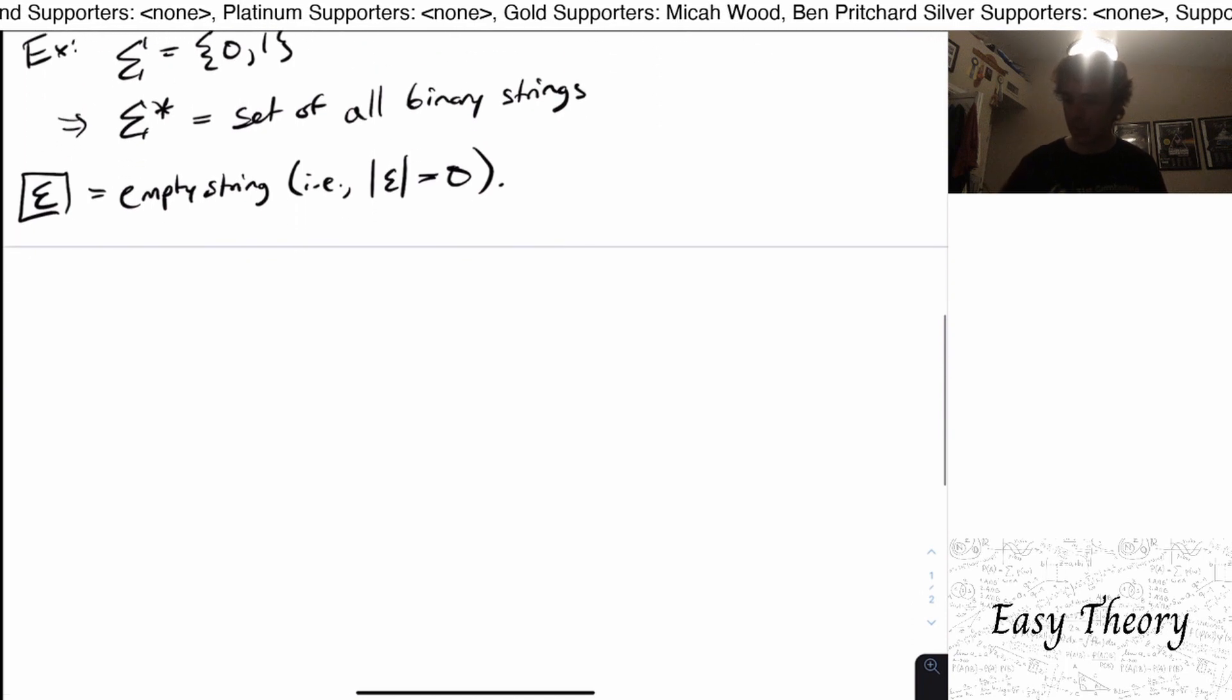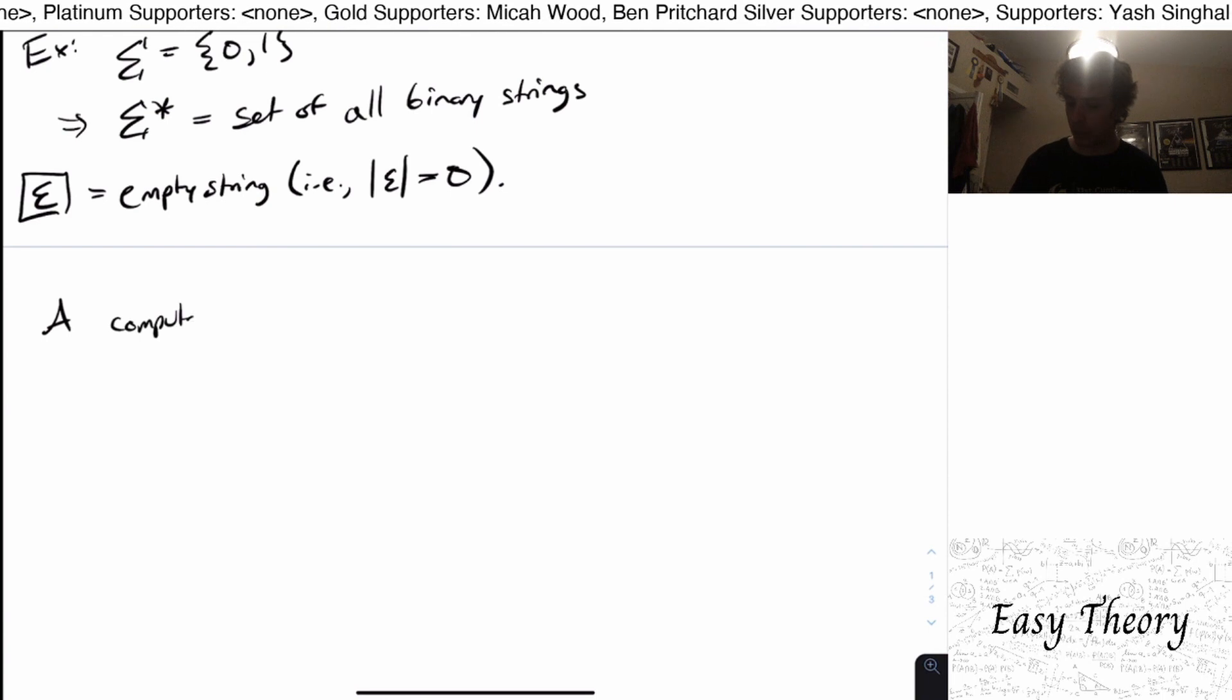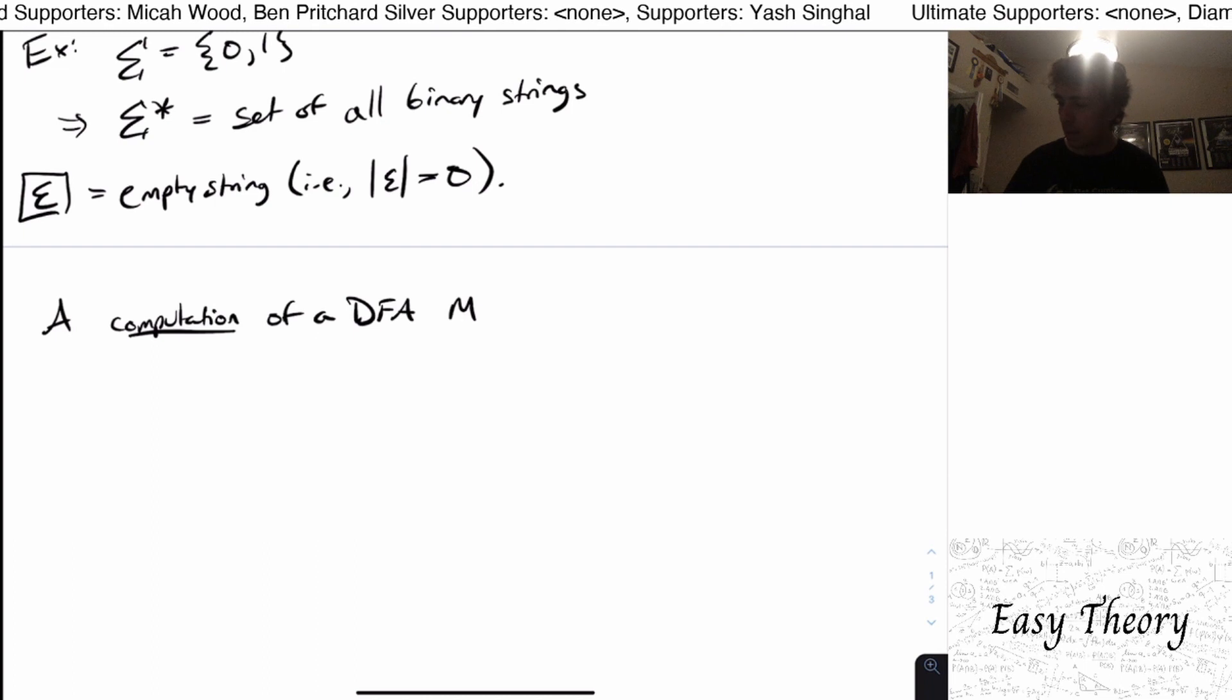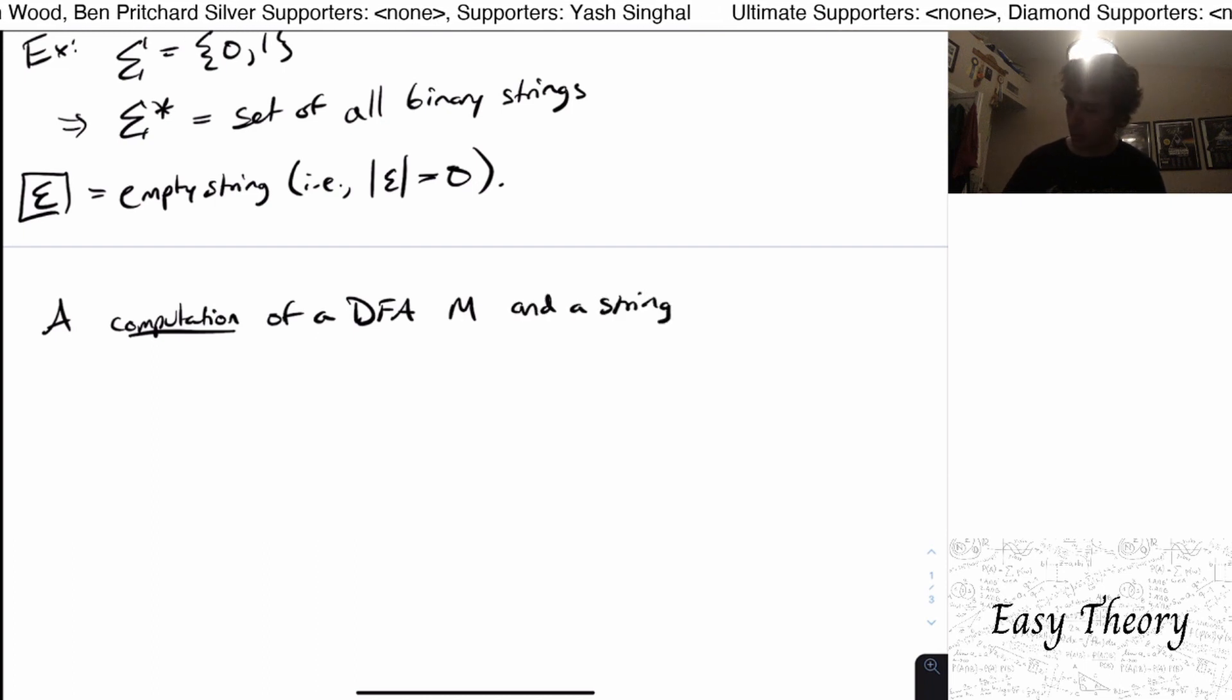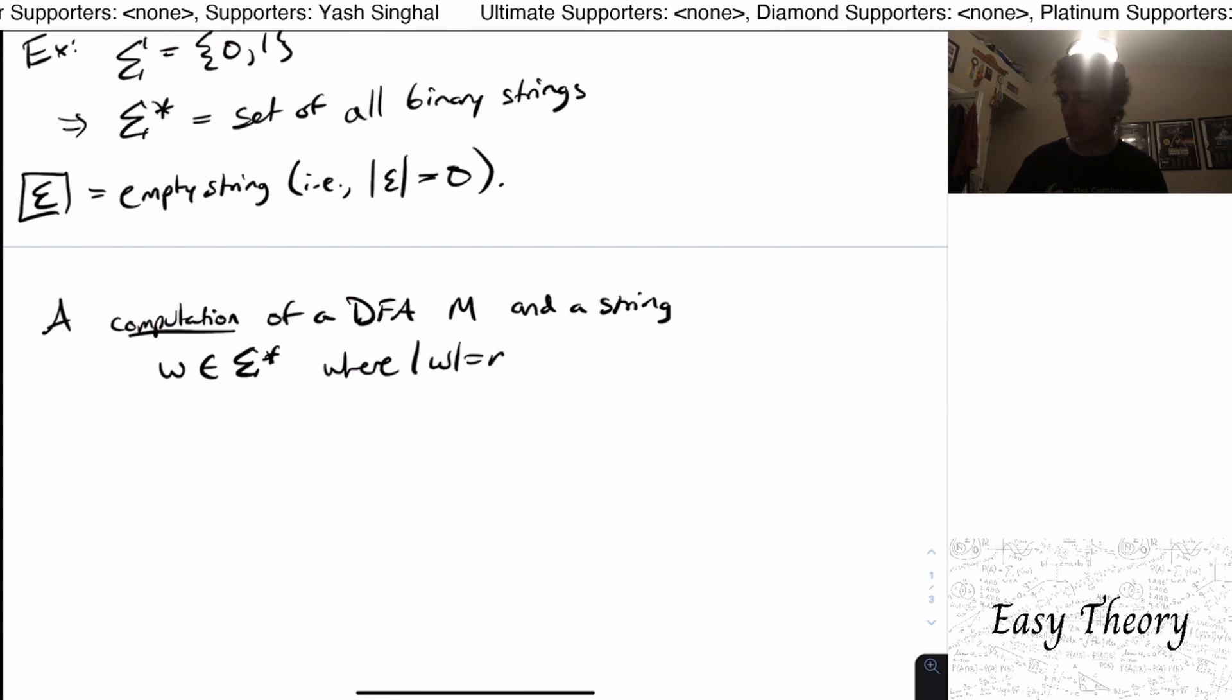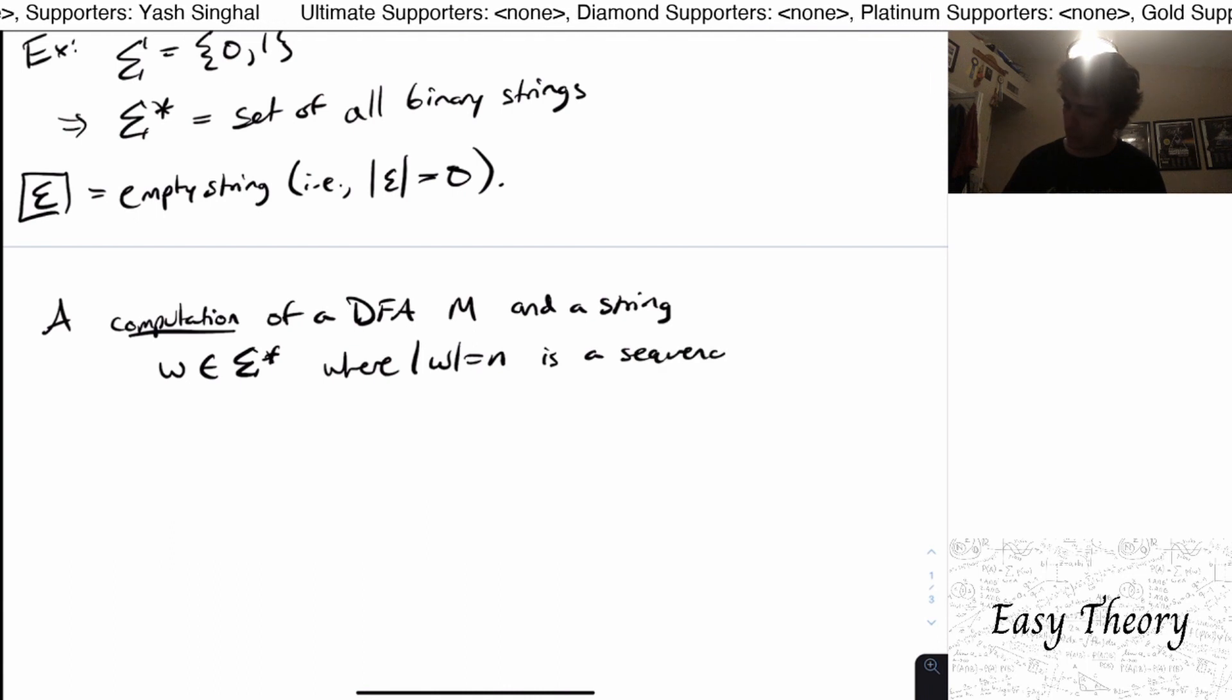So that is what an alphabet is. And now let's talk about what a computation is. So a computation. So this is a formal definition of what a computation is of a DFA. And let's call it M. And a string, w in sigma star, where, again, the length of w is n, just for our purposes, is a sequence of n plus one states.